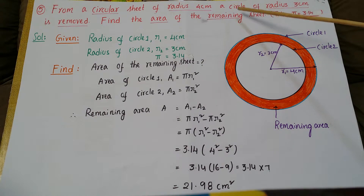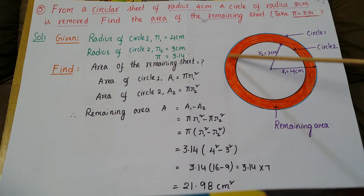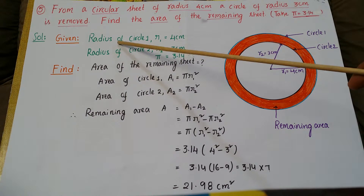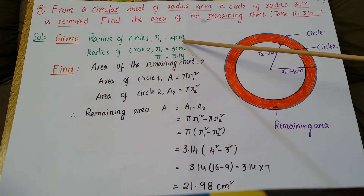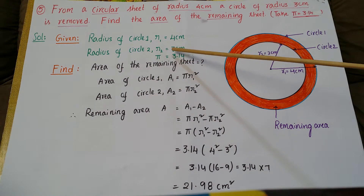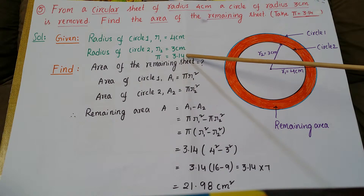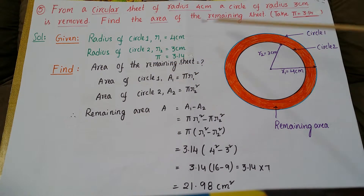We have to calculate the area of the remaining sheet. The bigger circle is Circle 1 and the smaller is Circle 2. If we remove the smaller circle from the bigger circle, we get the remaining area. Write the given values: radius of Circle 1, r1 = 4 centimetres; radius of Circle 2, r2 = 3 centimetres; and pi = 3.14. Find: area of the remaining sheet.